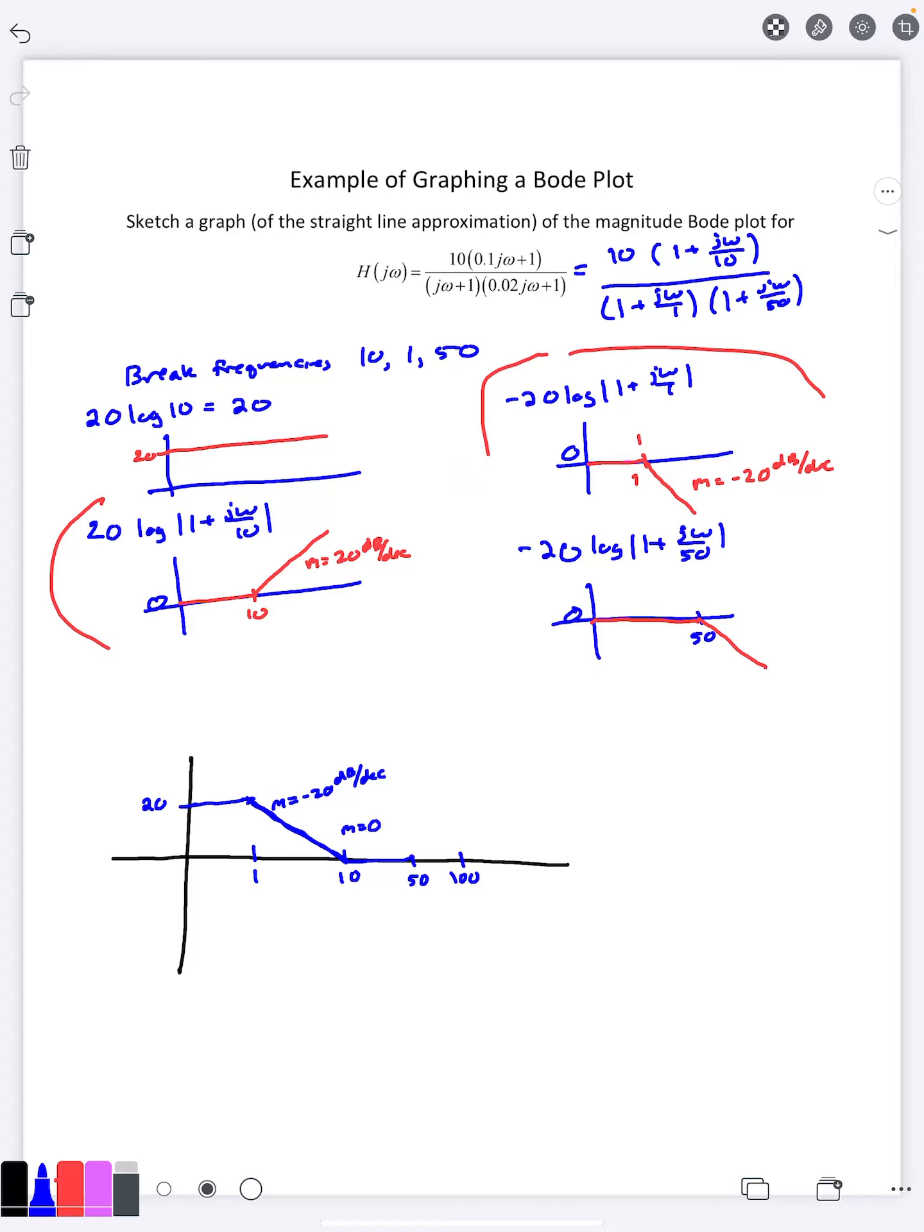And then once I reach to 50 here, omega equals to 50, then I reach the last break frequency, which is on the negative part, which means it's going to start going down now. And this right here is going to be our graph.